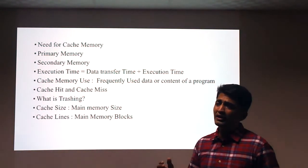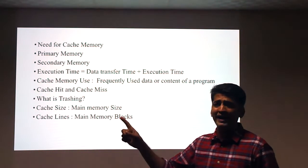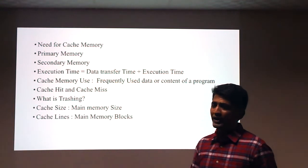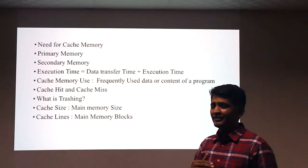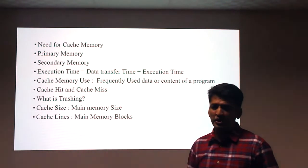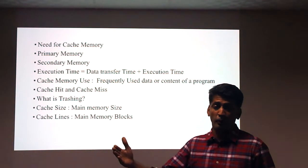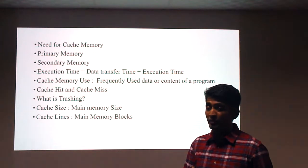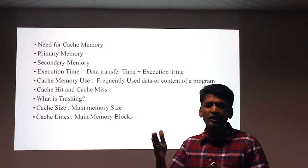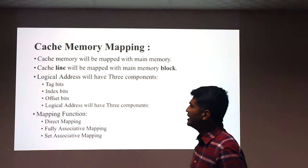Thrashing occurs when the processor always encounters cache misses — the required data is never in cache, so data must always be fetched from main memory, increasing transfer time. Regarding cache size: for example, the Skylake i7 processor has a 4 MB cache but supports up to 16 GB of RAM, and cache lines are mapped to main memory blocks.